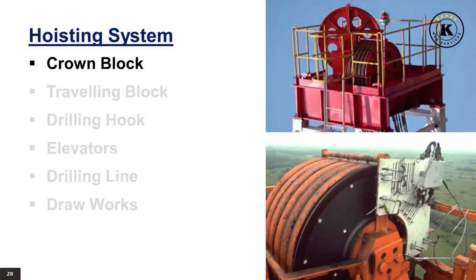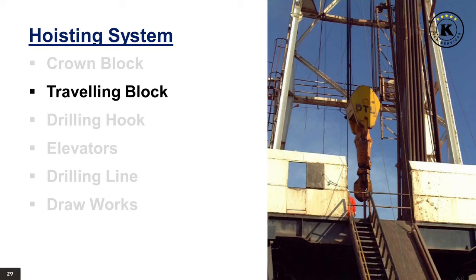The top of the derrick is known as the crown — a small platform designed to carry the crown blocks. The crown blocks are the uppermost set of sheaves on which the drilling line is strung; most crowns have from four to six sheaves. The traveling block is the traveling pulley assembly slung from the crown blocks by the drilling line, connecting the drilling line to the hook and swivel.